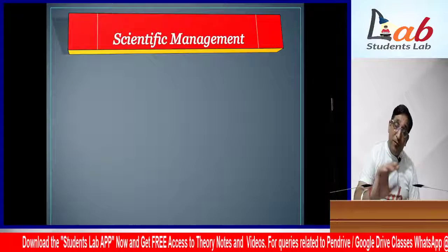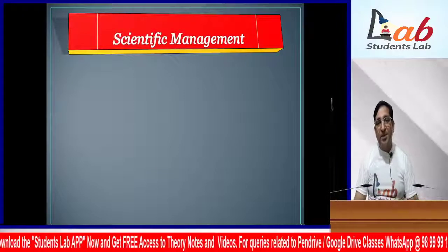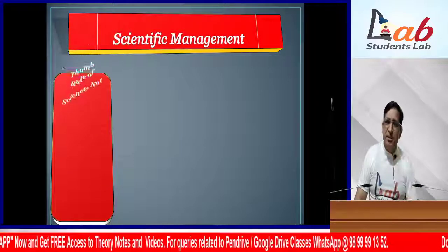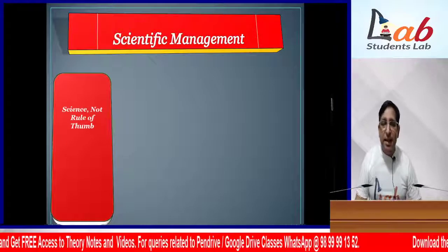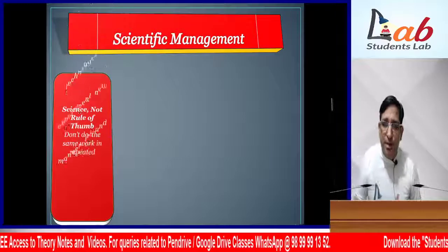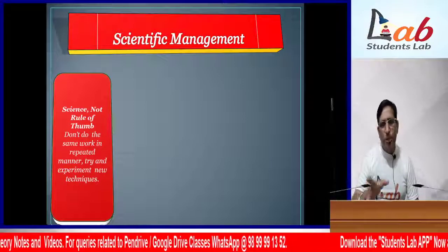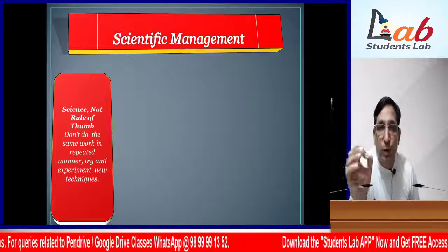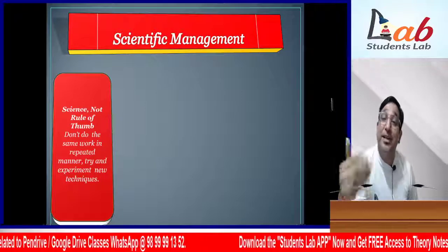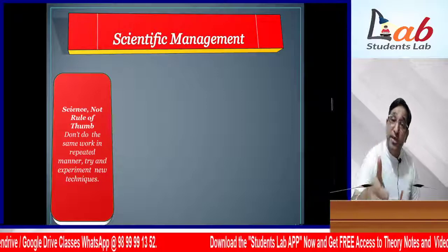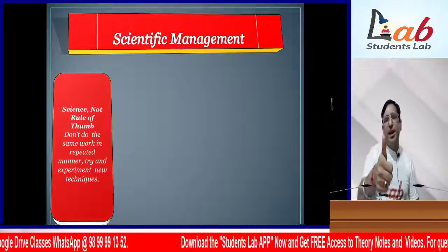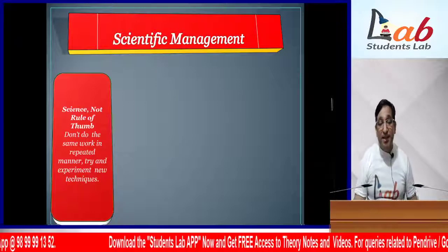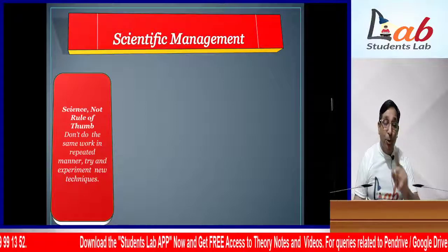Those were Fayol's 14 principles. Now let's talk about Scientific Management - Frederick Winslow Taylor's principles. He gave 4 principles. The first principle: Science, Not Rule of Thumb. His simple message was: don't do the same work in the same way repeatedly. Try something new, do new experiments - that is science. Don't do the same work in a repeated manner. Rule of thumb means doing the same work repeatedly in the same way. This is called Science, Not Rule of Thumb.